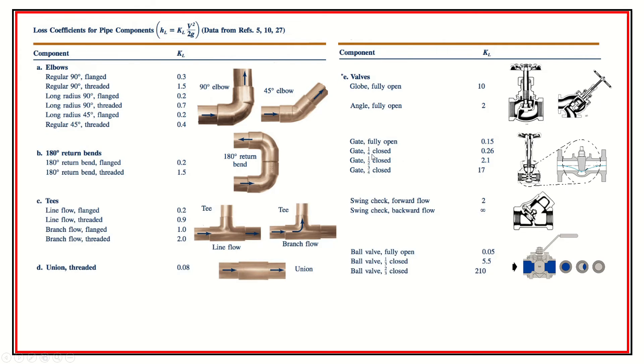You see how small a threaded union is. So I have some pictures of these later on, maybe in the next slide. An important one is a globe valve, we'll talk about valves here in a second. There's more pictures of valves, and you can see that we have a 10 which is pretty significant. They show a gate valve quarter closed, one half closed, and three quarters closed. You can see how quickly it goes up.